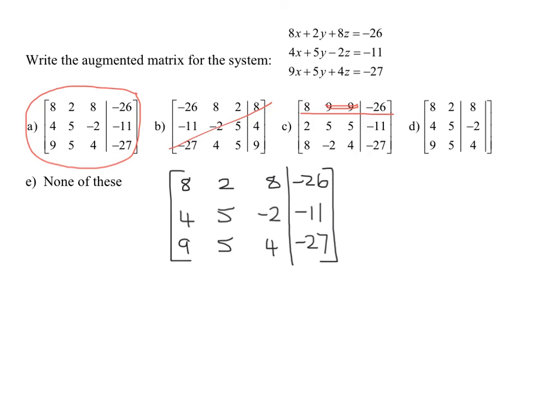Looking at D, looking at row 1, well, we're missing a whole column in this whole matrix. Because it only has three columns, we need four columns. Therefore, our answer is definitely A.